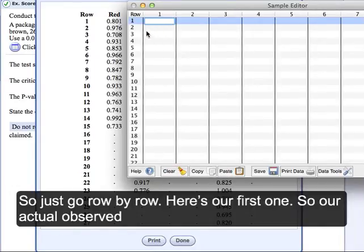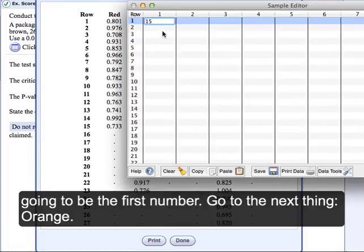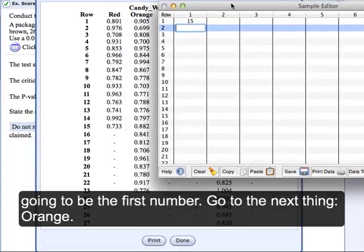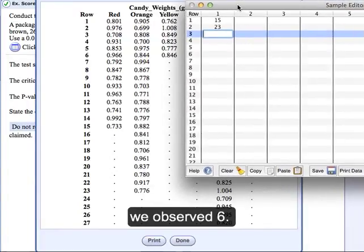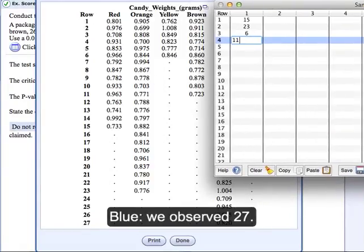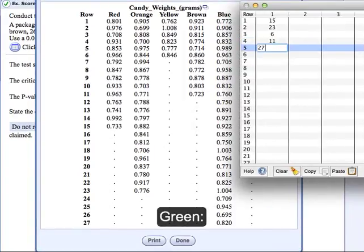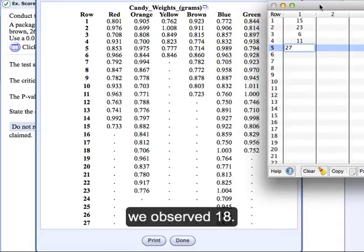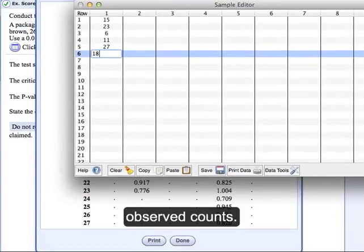So just go row by row. Here's our first one. So our actual observed reds, we observed 15 of them out of 100. So that's going to be the first number. Go to the next thing. Orange, we observed 23. Yellow, we observed 6. Brown, we observed 11. Blue, we observed 27. Green, 18. And there we are. So those are our actual observed counts.